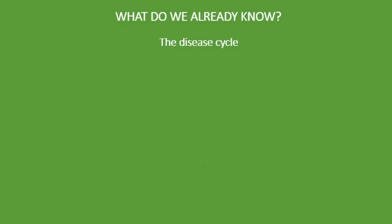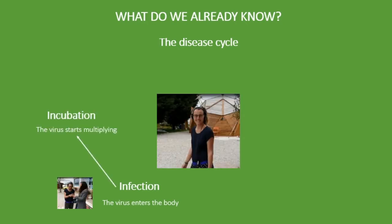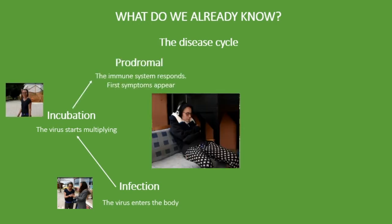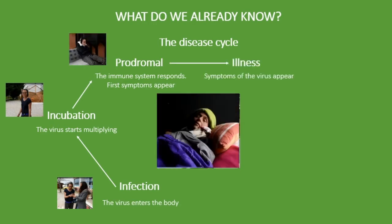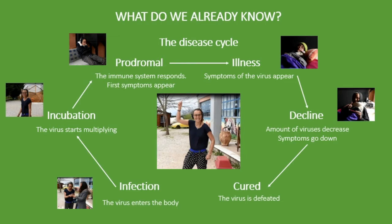What do we already know? We have learned the cycle of a disease. First, we get infected — the virus enters our body and starts multiplying, but at the beginning we do not feel the symptoms. Our immune system responds and we start feeling the first symptoms. We reach the peak of the disease and the symptoms of the specific disease appear. The amount of viruses decreases, the symptoms go down, the virus is defeated, and we are cured.